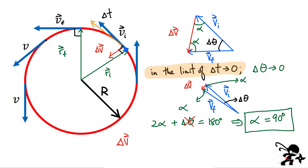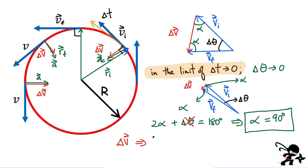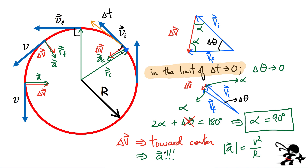The direction of delta v is also the direction of the acceleration. So at all points on the circle, the vector delta v — and therefore the centripetal acceleration — points toward the center of the circle, regardless of where you are on the path. The acceleration has magnitude v squared over r and its direction is always toward the center of the circle.